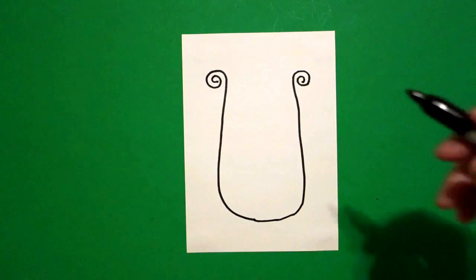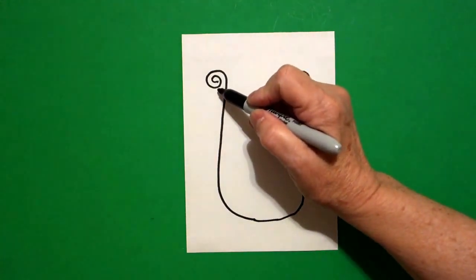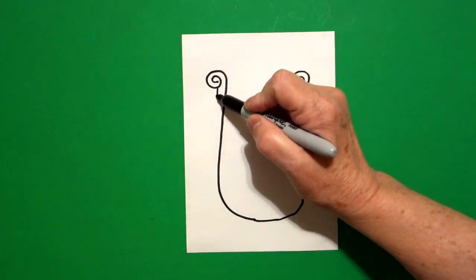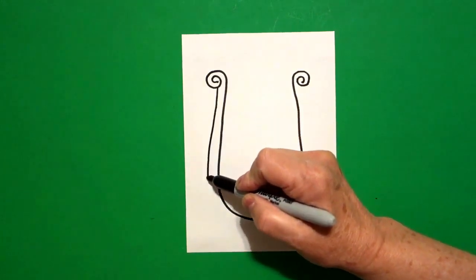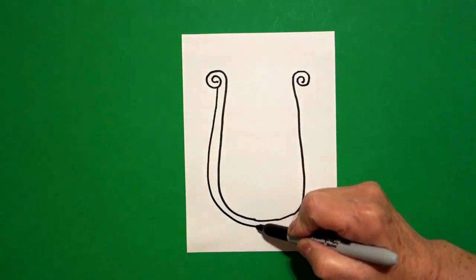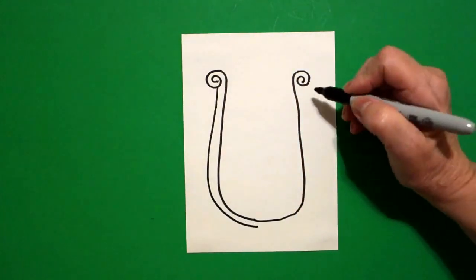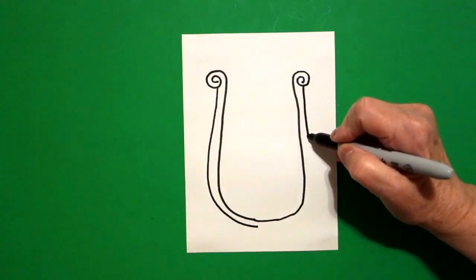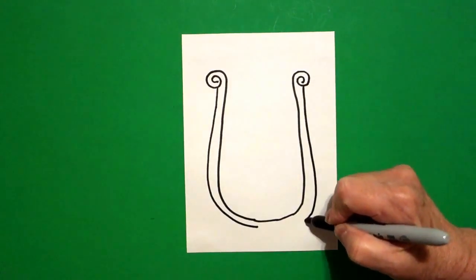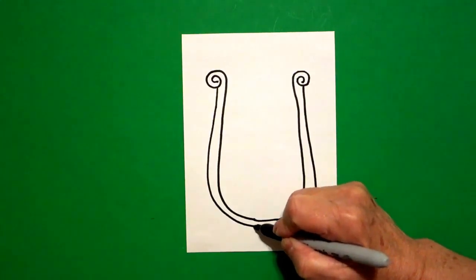Now, I go back up to the left and I'm going to mimic the line I just drew. So, I go straight line, curve line down, stop, come on the right hand side, straight line down, curve at the bottom, and connect.